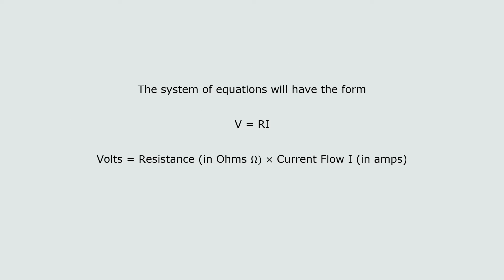The system of equations is going to have the form: volts equals resistance in ohms times current flow, which we use a capital I to represent in amps. So resistance is in ohms, current flow is in amps, and volts is in volts. Remember this form of the equation because that's what we'll use to set up a matrix equation.